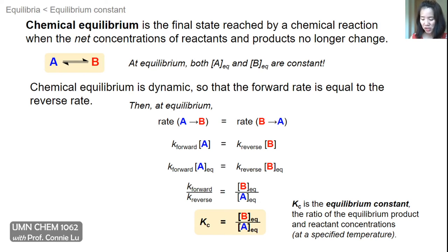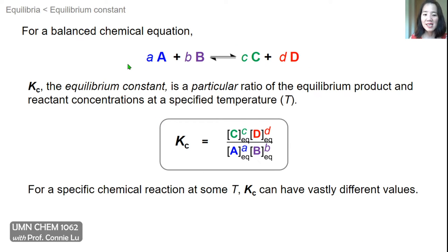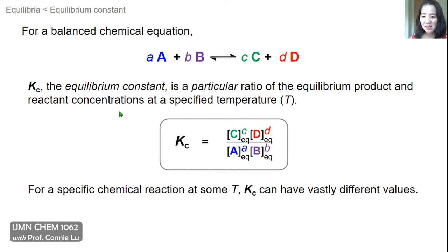This will be an important equation in this chapter. More generally, you can define Kc for any complex chemical equation — for instance, with two reactants A and B, two products C and D, and different stoichiometric coefficients. Kc is still a ratio of equilibrium product and reactant concentrations at a specified temperature. The general form has product concentrations C and D on top, and reactant concentrations A and B on the bottom, each raised to the power of their coefficients in the chemical equation.